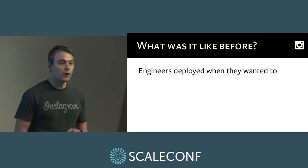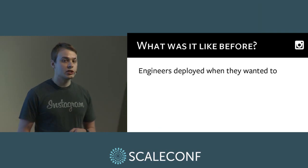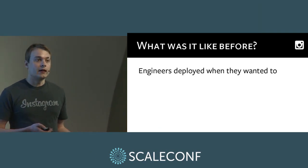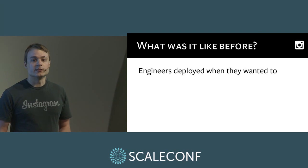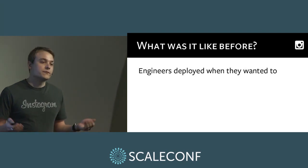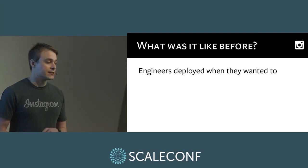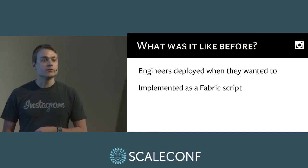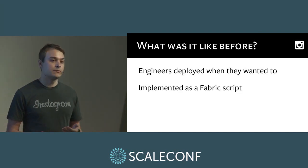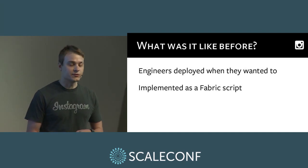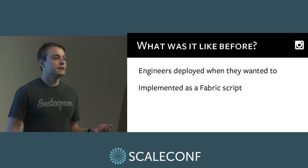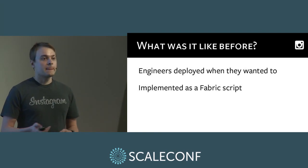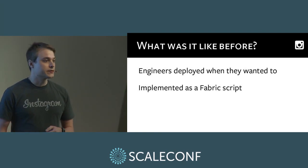How did things work before? Engineers deployed changes when they wanted to — they'd land their change, and if they wanted it out now, they'd manually run a deployment; otherwise they'd wait for someone else to do it later. This was all implemented as a Fabric script — Fabric being a Python library and tool for SSH-ing to servers. It implemented the process of creating a package, distributing to all the web servers, and orchestrating the restart of the web servers.